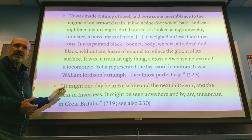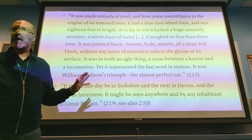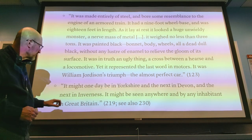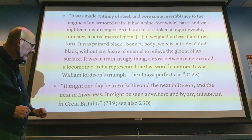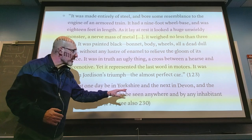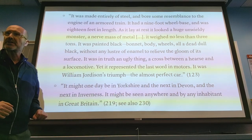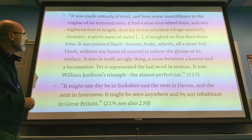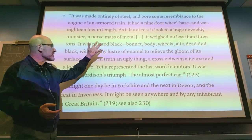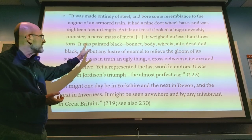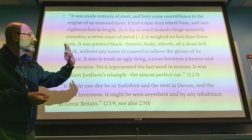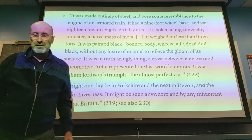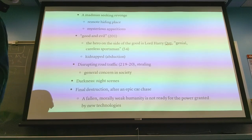Look at this passage about the speed of the car annihilating space, because it can be almost everywhere at the same time: 'It might one day be in Yorkshire and the next day in Devon and the next in Inverness' — referring to different parts of the United Kingdom. It might be seen anywhere by any inhabitant in Great Britain. So one vehicle in the wrong hands is sufficient to bring havoc through the entirety of England. And because it is an instrument of evil, it is painted black — bonnet, body, wheels — all a dead, dull black without any luster of enamel to relieve the gloom of its surface. Even the description of the car is imbued with this moralism.